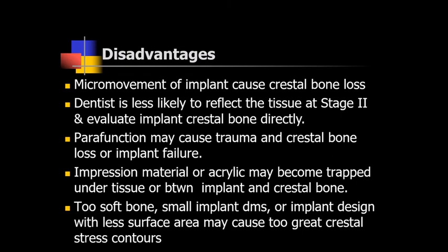The disadvantages of the NFIT concept: micro-movement of the implant is greater in this technique, which can cause crestal bone loss or implant failure compared to the two-stage approach. Another disadvantage is that the surgeon does not reflect tissue at second-stage surgery, so direct observation of the bone is not possible to evaluate facial or lingual bone loss. The dentist is less likely to reflect tissue at stage 2 and evaluate the implant crestal bone directly. Parafunctional habits from the tongue or foreign habits may cause trauma, crestal bone loss, or implant failure.